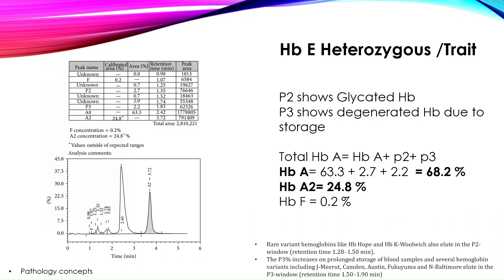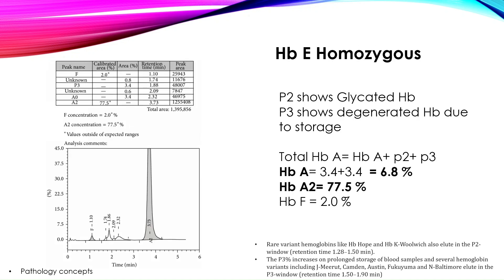Next is HbE heterozygous. HbA is 68.2% and HbA2 shows 24.8%. As we learned, if HbA2 is more than 10% on the HPLC graph, we should consider hemoglobin E. Since the percentage is less than 50%, we conclude it is HbE heterozygous or trait. In HbE homozygous, HbA is 6.8% and HbA2 is 77.5% — more than 50% — so we conclude it is HbE homozygous.